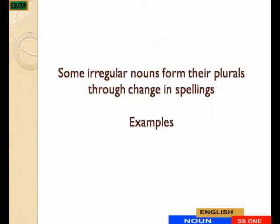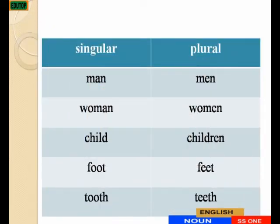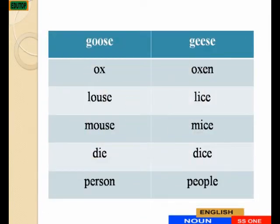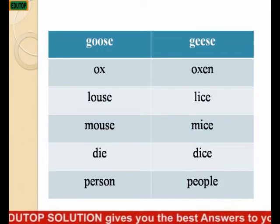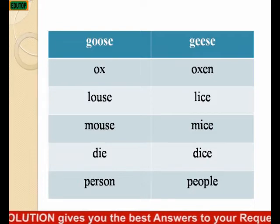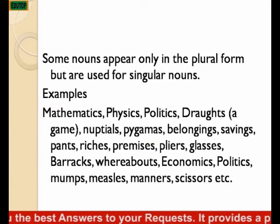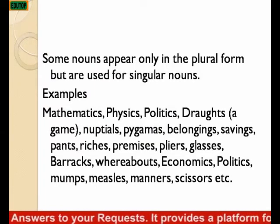Some irregular nouns form their plurals through change in spelling. Examples: man becomes men, woman becomes women, child becomes children, foot becomes feet, tooth becomes teeth, goose becomes geese, ox becomes oxen, louse becomes lice, mouse becomes mice, die becomes dice, person becomes people.